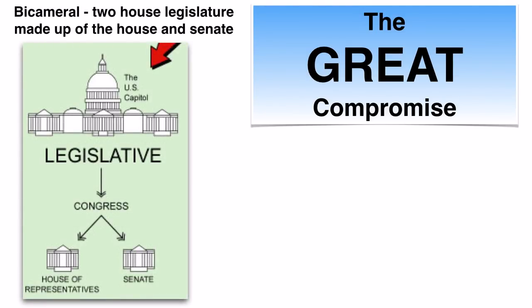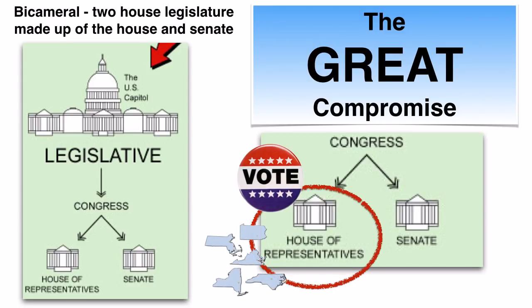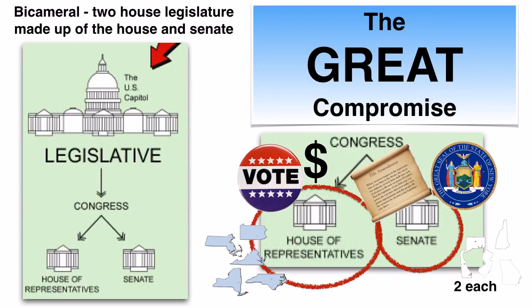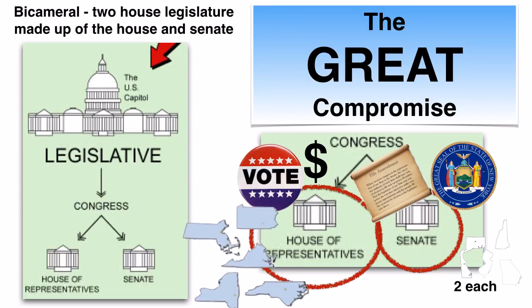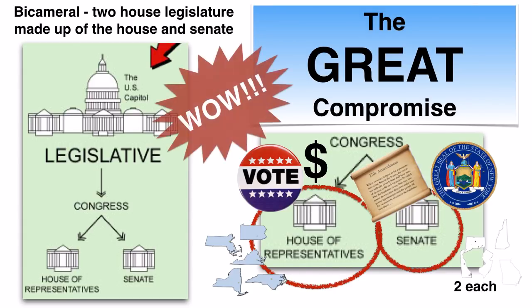The Great Compromise took the idea of a bicameral legislature from the Virginia Plan. The House of Representatives would be elected directly by the people, and larger states would get more representatives and thus more power. The Senate would make small states equal to large states, with all states getting two votes. Senators would be appointed by state governments — later changed by the 17th Amendment to require direct elections. The last part stated that all bills dealing with raising money, such as taxes, must start in the House. This compromise addressed large states' desire for more power while ensuring small states weren't overruled.